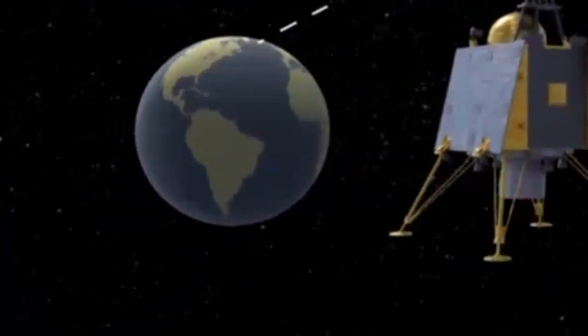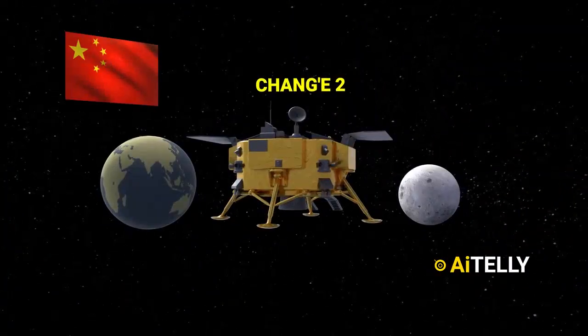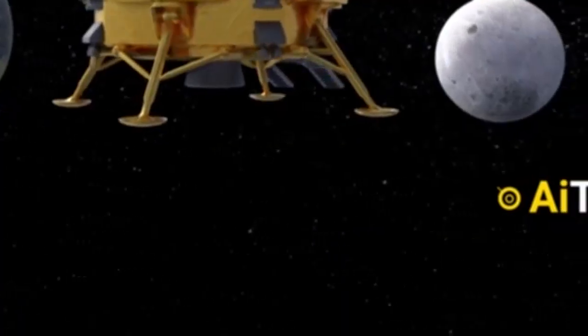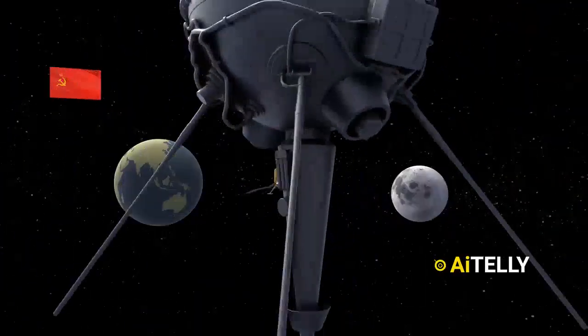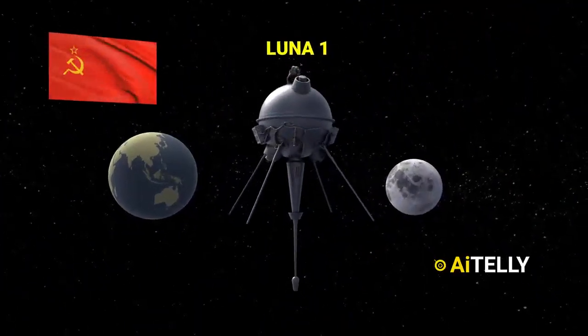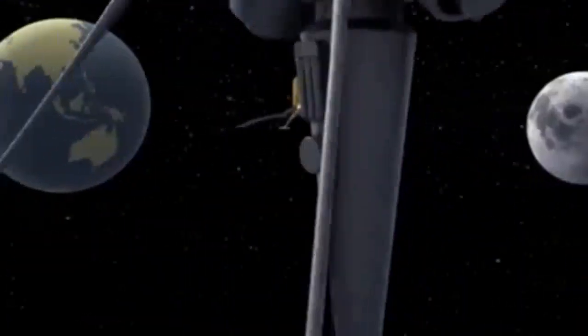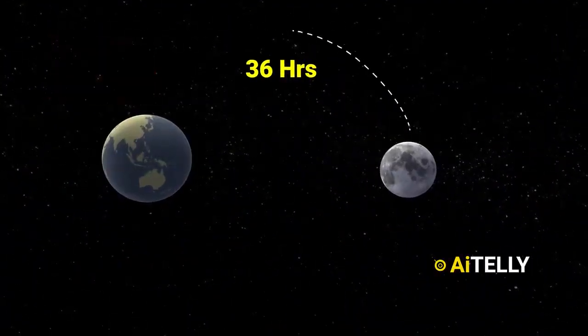In contrast, China's Chang'e-2 launched in 2010 only took four days to cover the distance between Earth and the moon. The Soviet Union's Luna-1, the pioneering unmanned mission that came close to the moon, accomplished the journey in a mere 36 hours.